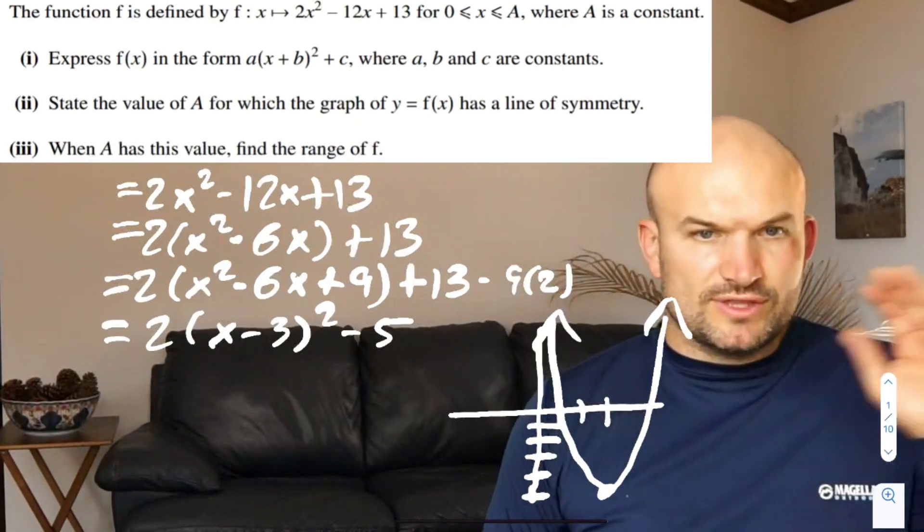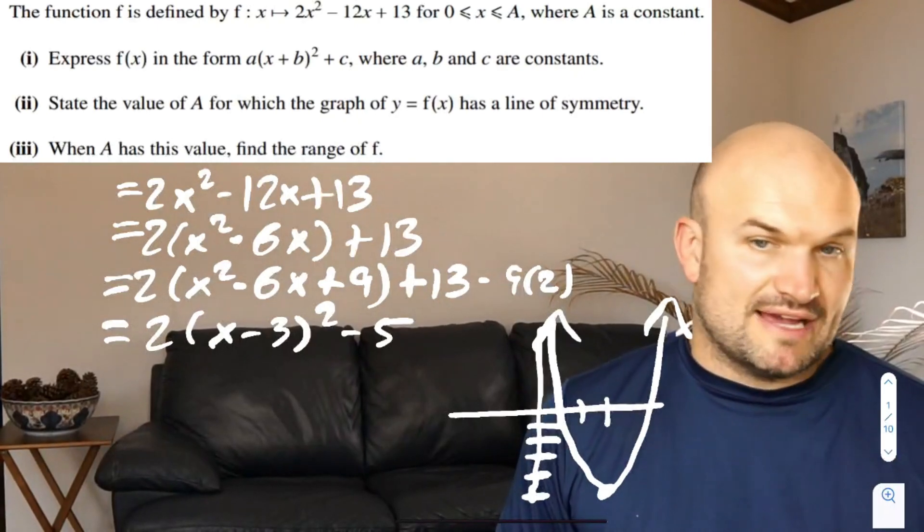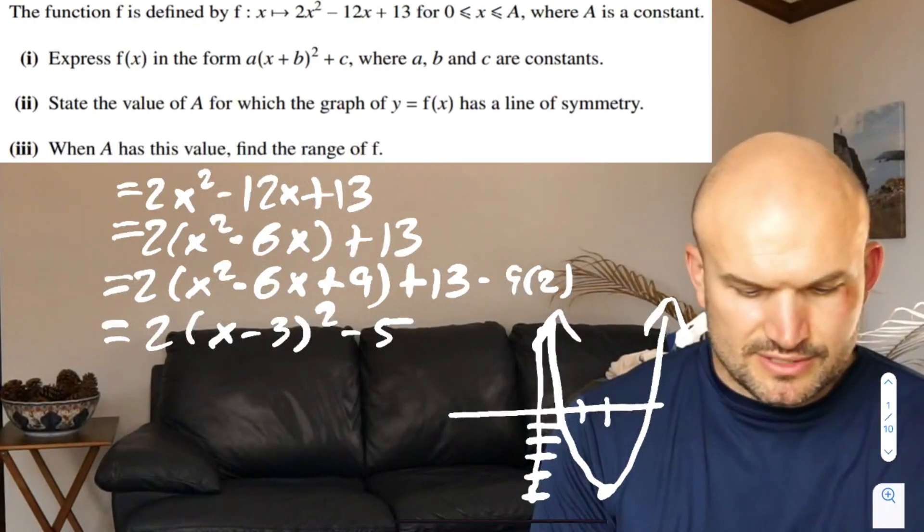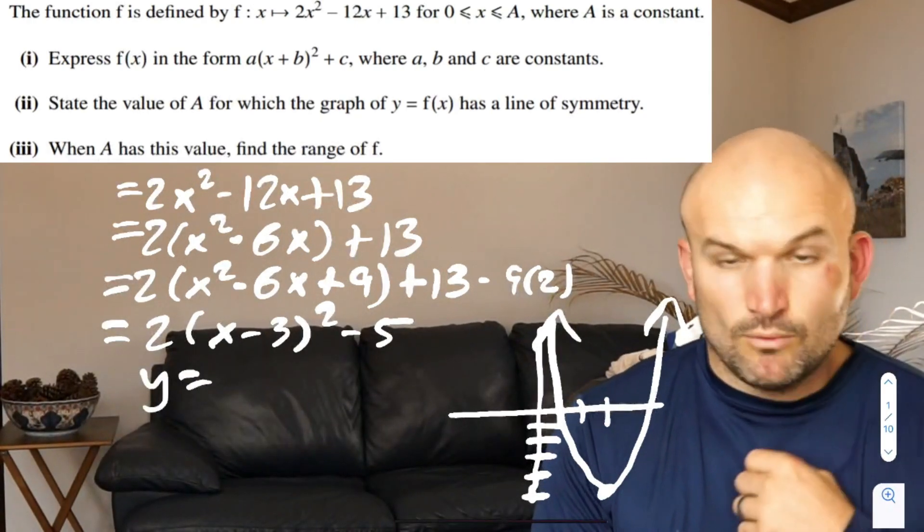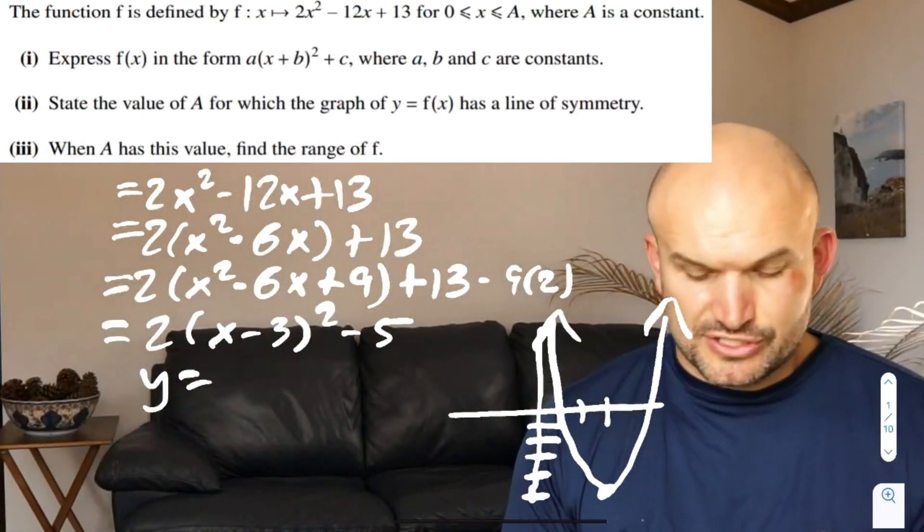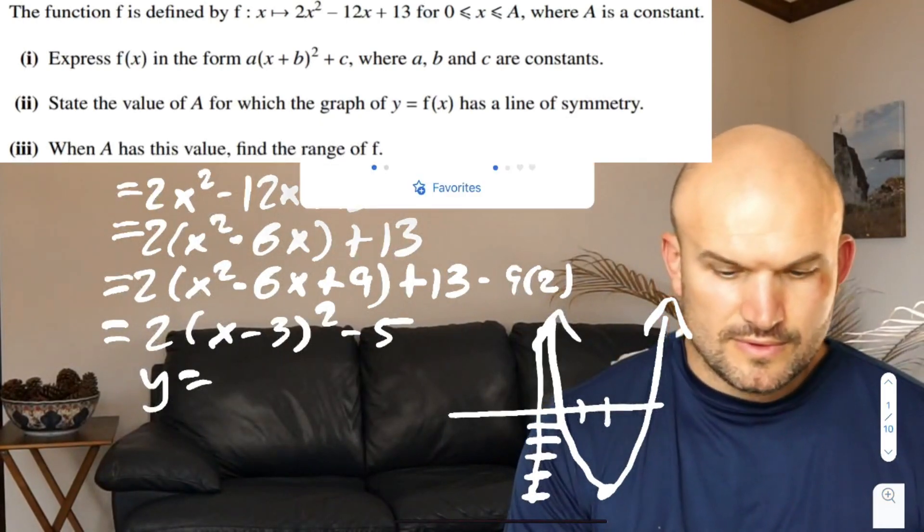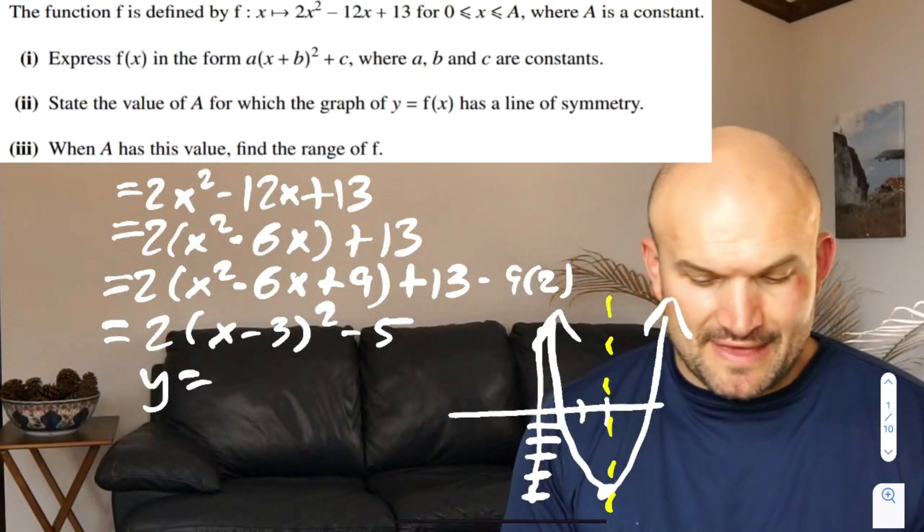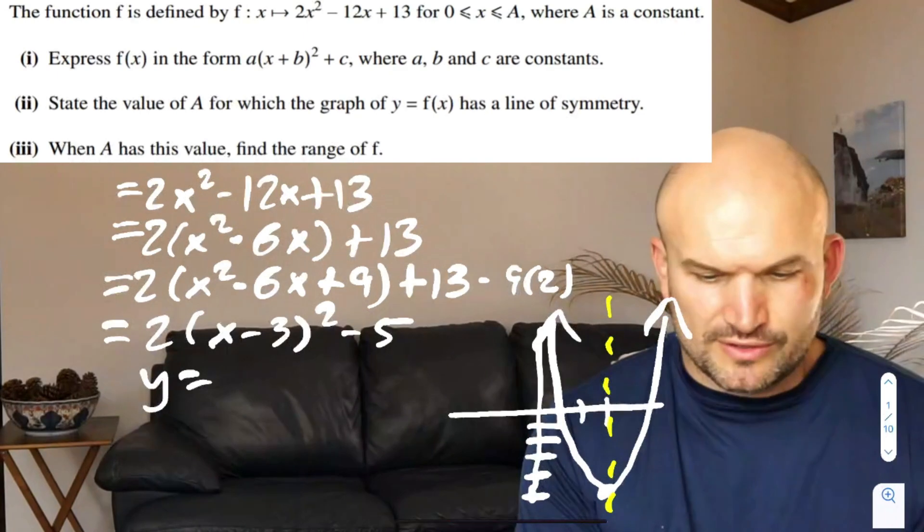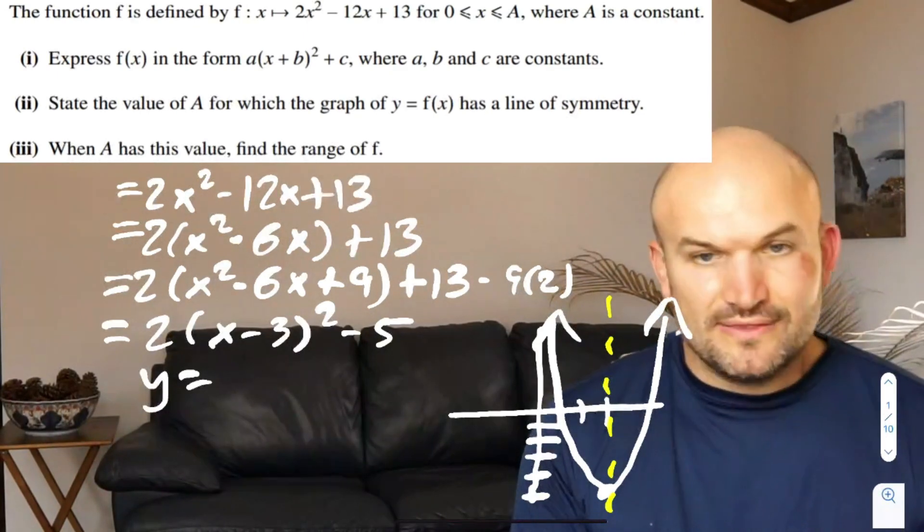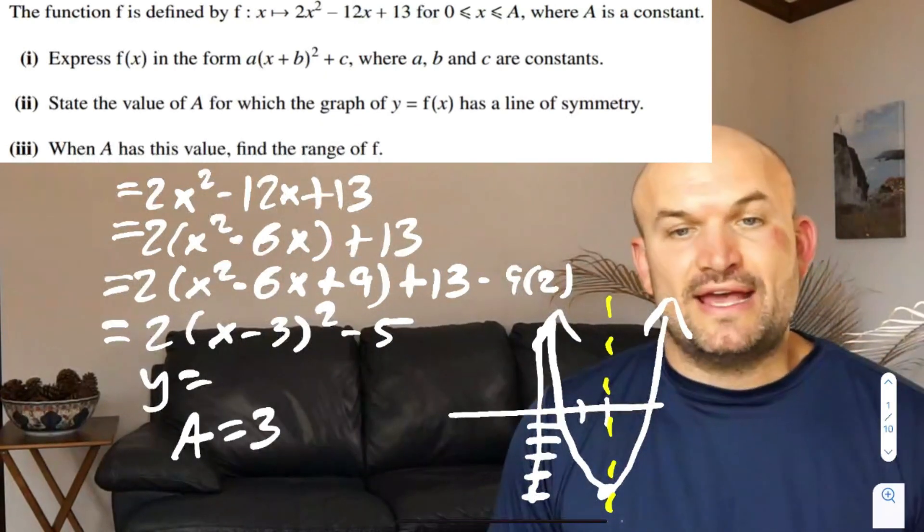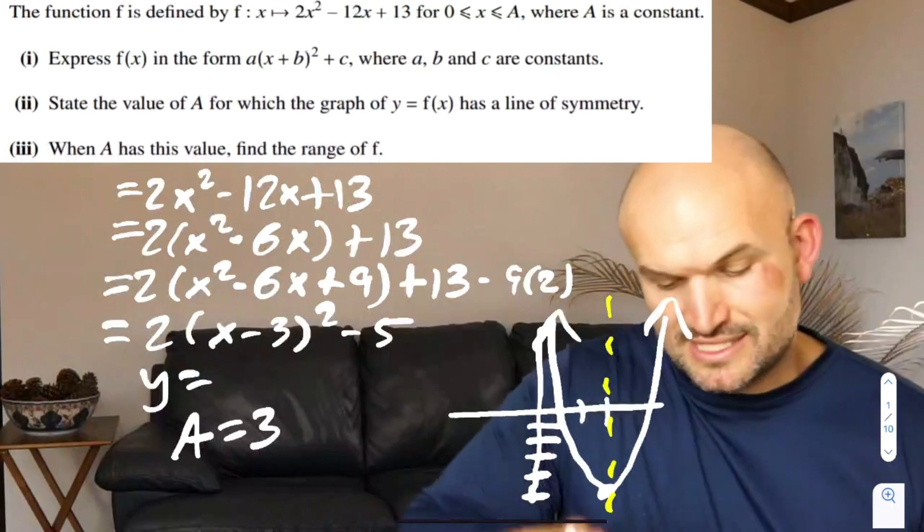Now, the question was state the value of A for which the graph y equals f(x) has a line of symmetry. Here's my equation, let's call this y equals this equation. The line of symmetry is going to go through the vertex. That's going to occur here. You can see we moved over three units. In this case, we're going to have when A is equal to three, we're going to have a line of symmetry through the vertex.